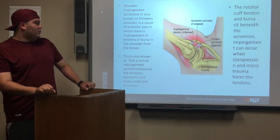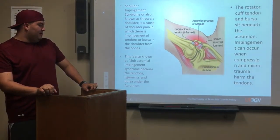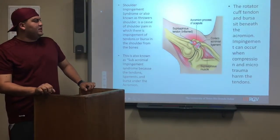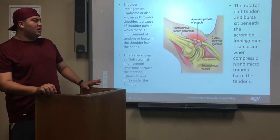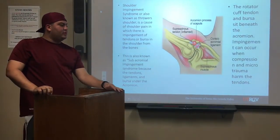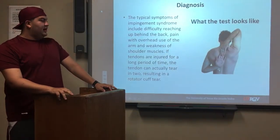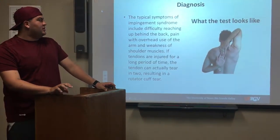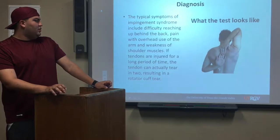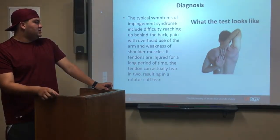Shoulder impingement syndrome, also known as swimmer's shoulder, is a cause of shoulder pain where there is impingement of tendons or the bursa in the shoulder from the bones. This is also known as subacromial impingement syndrome because of the tendons, ligaments, and bursa under the acromion. The rotator cuff tendon and bursa sit beneath the acromion, and impingement can occur when compression and microtrauma harm the tendons.